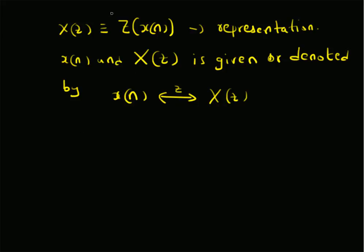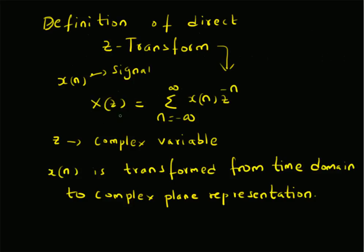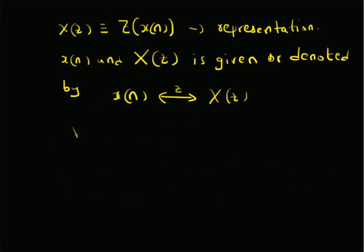From the definition of X(z), we can clearly see that it is a power series — a summation from minus infinity to plus infinity of x(n) z to the power minus n. It is like a weighted power series where z to the power minus n represents the power terms. So X(z) is a power series.